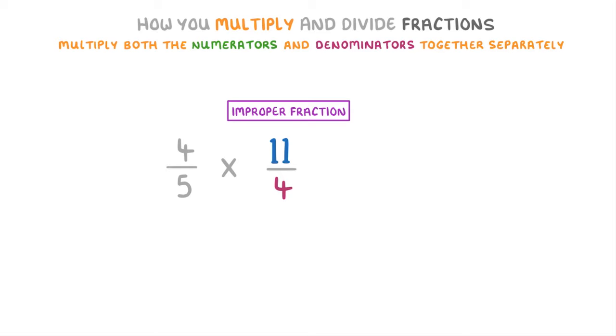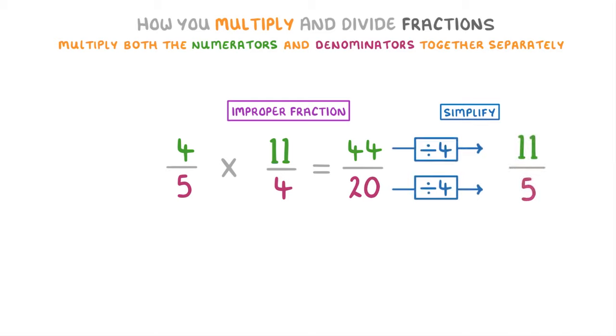Then we can just multiply 4 fifths by 11 over 4 like in our other examples. So 4 times 11 is 44, and 5 times 4 is 20, which gives us 44 over 20. And then we can simplify that by dividing top and bottom by 4 to get 11 over 5.